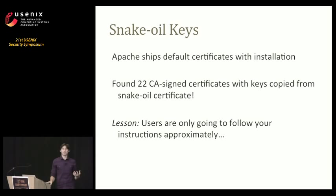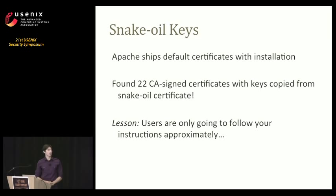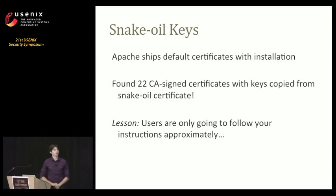We also find tutorials referencing Apache snake oil keys — keys often included by default, referenced in manuals with a PEM file. People take this to the extreme of just using that default key. We found 22 CA-signed certificates for businesses that simply copied the key from the snake oil certificate. If you Google for these default keys, you can easily find the corresponding private key on the internet. The lesson here is that users follow your directions — if you say 'use this file,' they will.